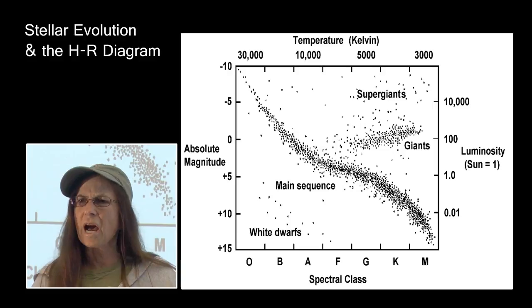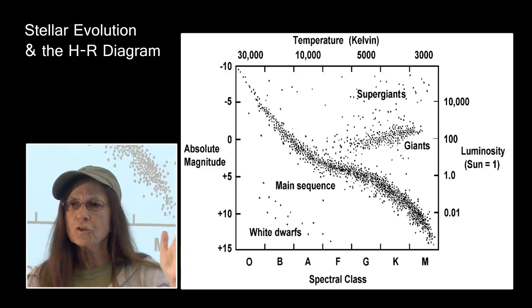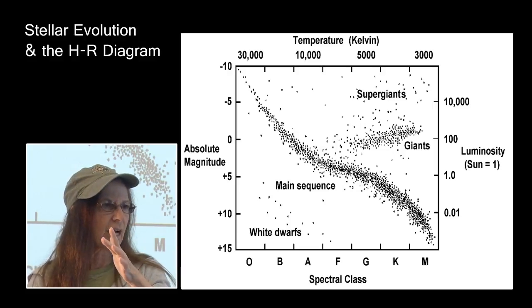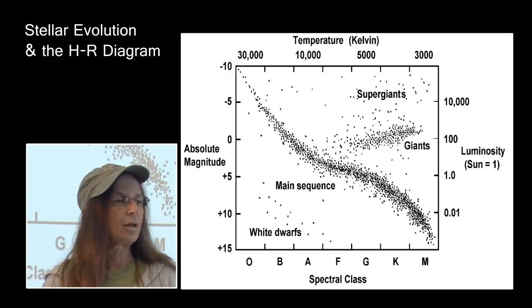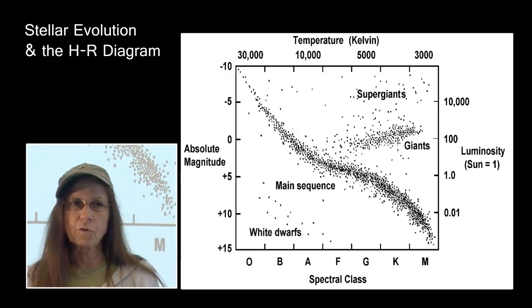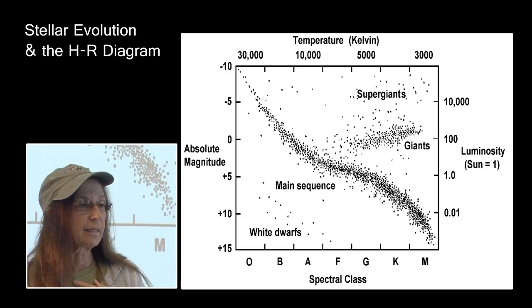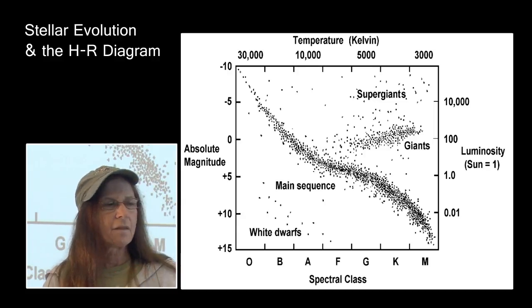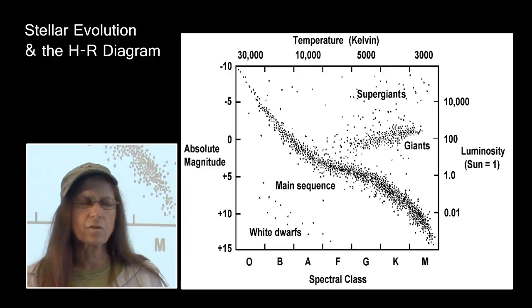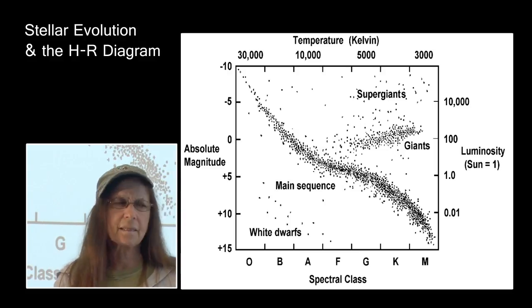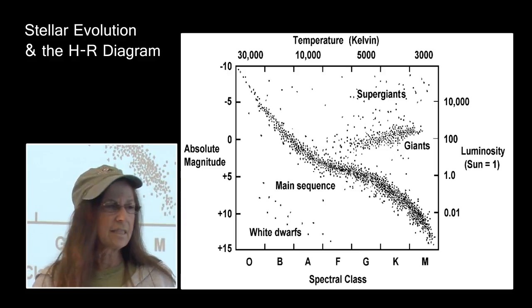More massive ones transition from the top of the main sequence over to the supergiant and giant supergiant branch. They also will transition through, as we will see, because this is what we are focusing on for 2018, these massive stars. They also are some instability strips up there depending upon the mass of the star that they are going to transition through.